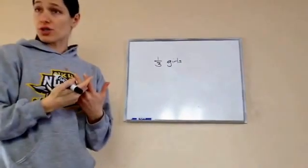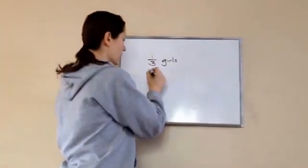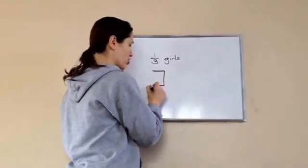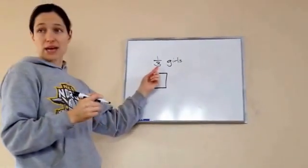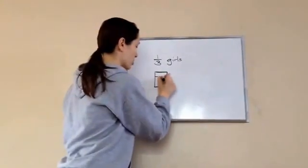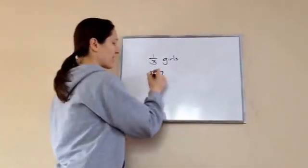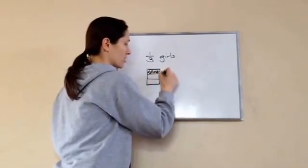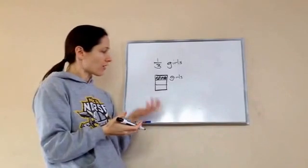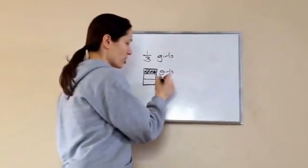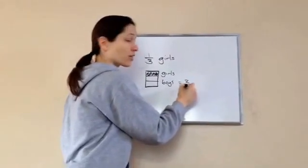Now, if you need to draw an illustration, sometimes I would, especially as they get bigger. The way I always do it is I just draw a rectangle and it's broken up into three pieces. I would just break it up into three, try to do even pieces — one, two, three. And if I say this much is girls, well, then I can clearly look at that and go, okay, there's only two left. So two thirds are boys. So my answer would be two thirds.